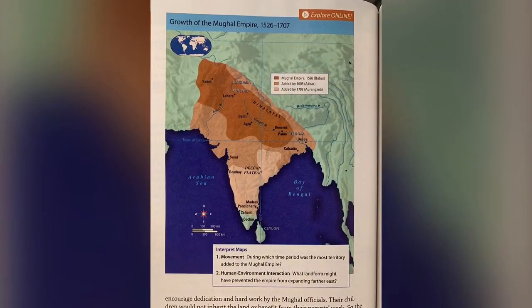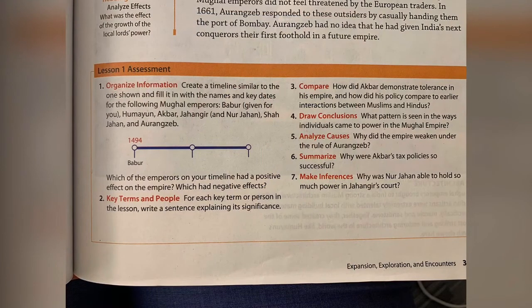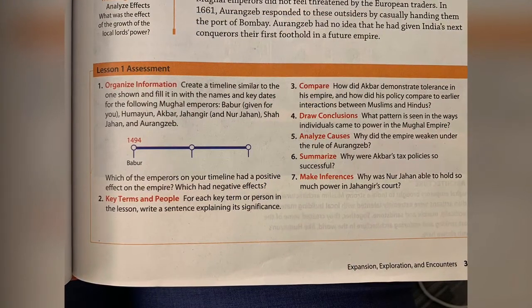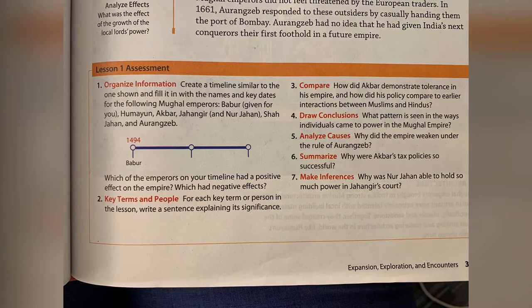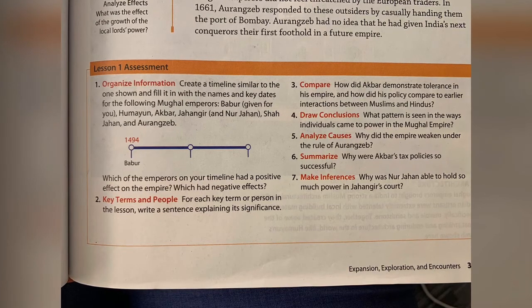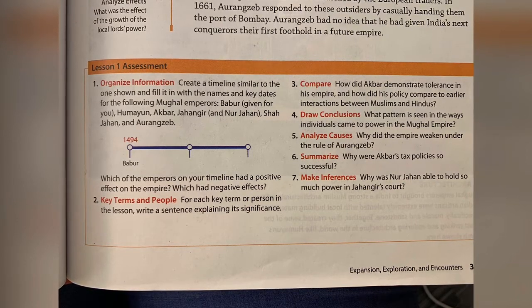I see a map that identifies the area, and I really focus on the questions at the end of the passage. They ask me about the leaders and the key terms. They ask me to compare governments of the multiple leaders, draw some conclusions, and summarize. I can tell based on these questions that I'm really going to be thinking about the leadership of the Mughal Empire.